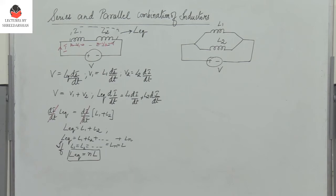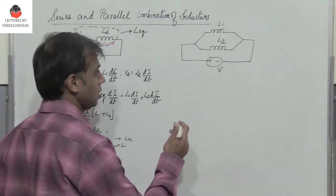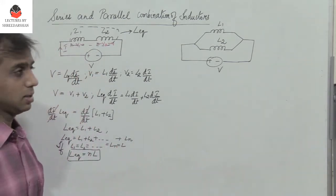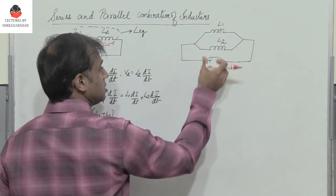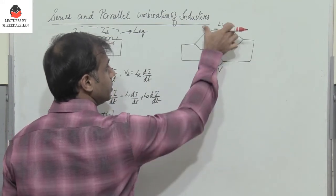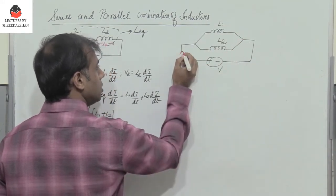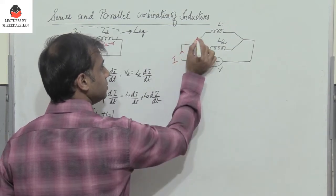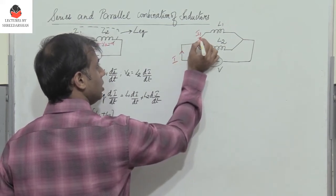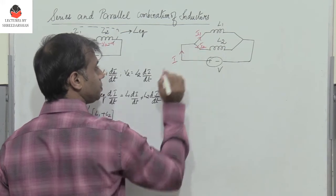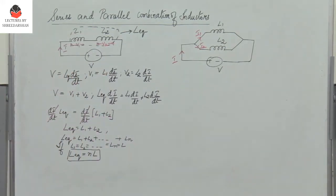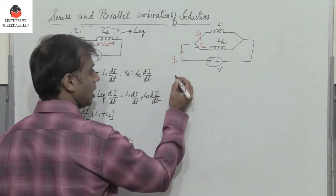Now let us consider inductors connected in parallel. When elements are connected in parallel, their voltages are the same, so the same voltage V appears across L1 and across L2. The total current I gets divided as I1 flowing through L1 and I2 flowing through L2.